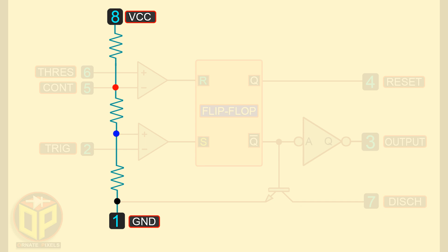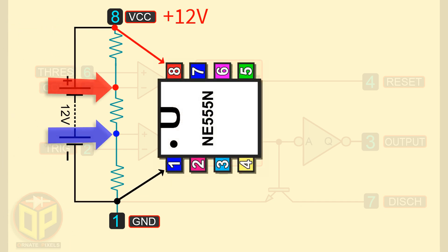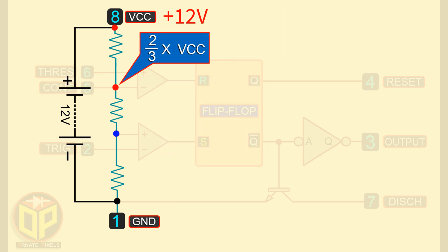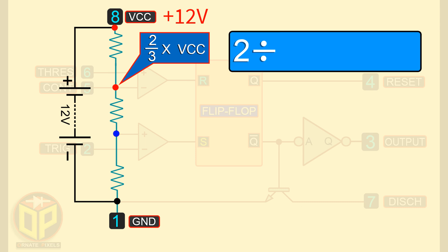Now, look carefully. If we supply 12 volts to the IC, then at these two terminals, two different voltage will be obtained. Here, it will be 2 by 3 into VCC. That is, 2 divided by 3 into 12 volts VCC is equal to 8 volts. So, here it will be 8 volts.